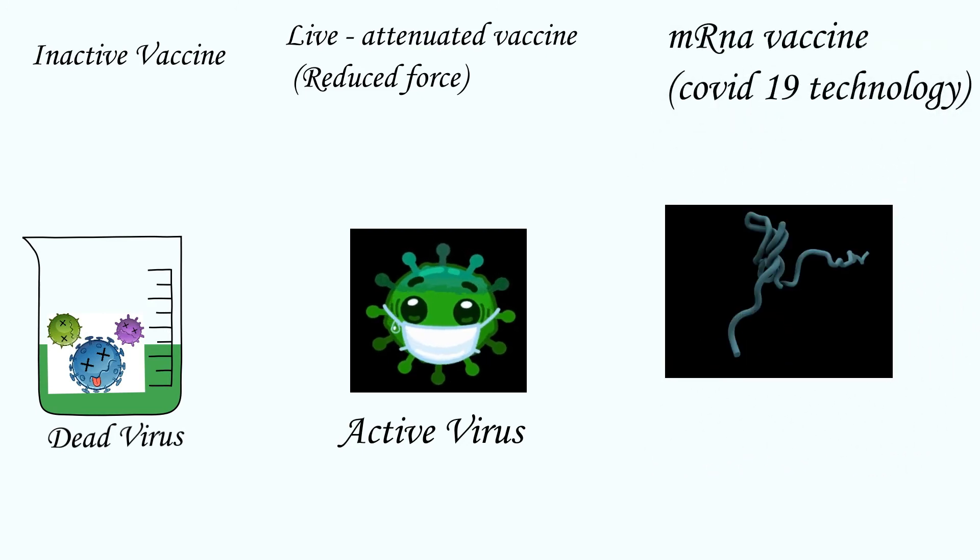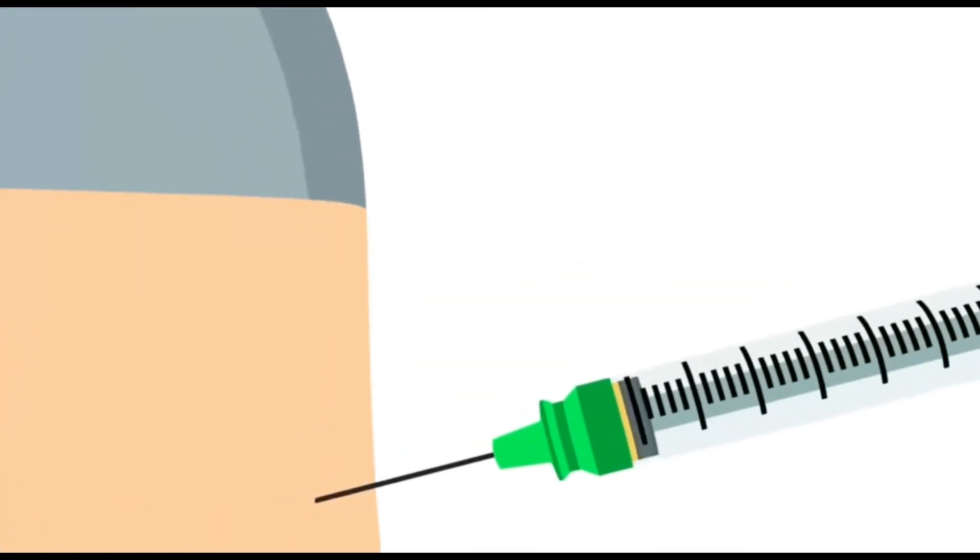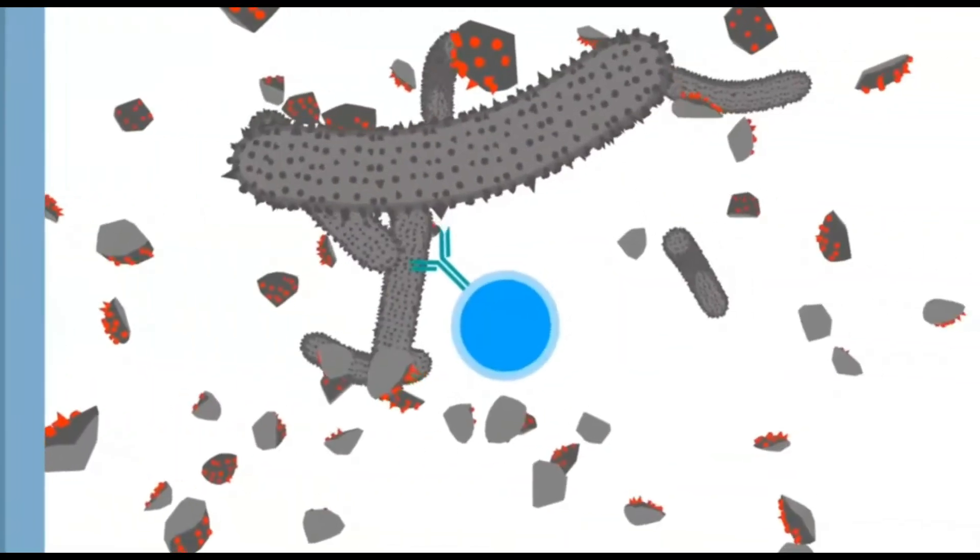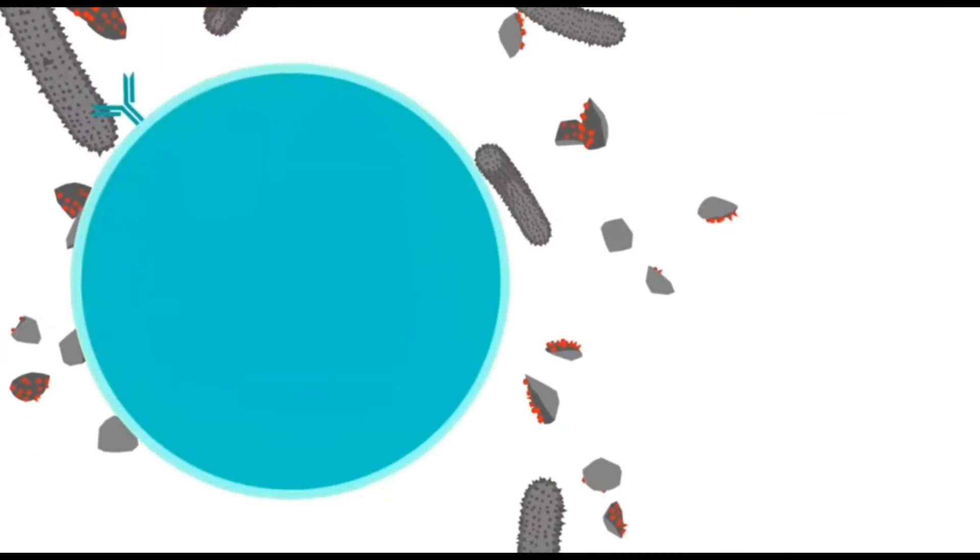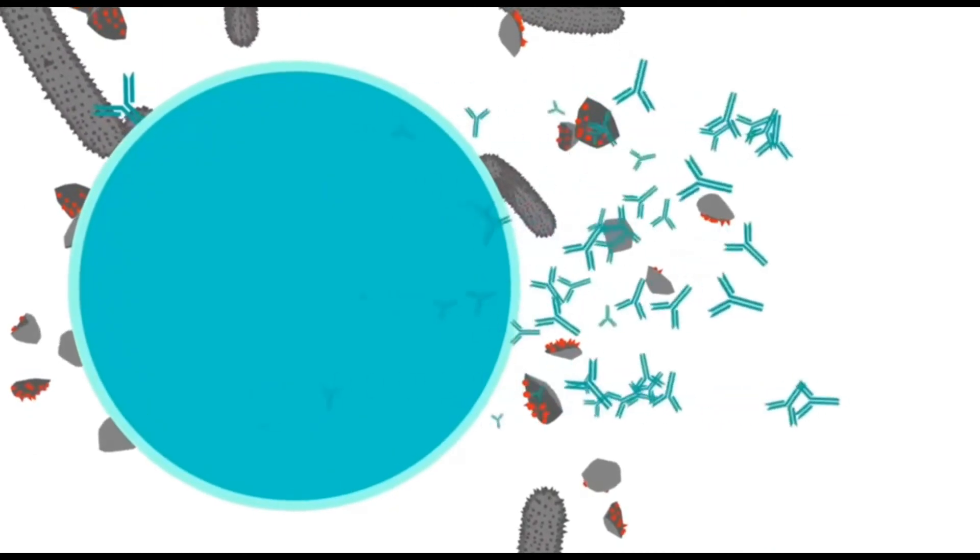When a vaccine is given to someone, these dead or inactive viruses enter the body and a natural response triggers, like when a real virus enters. The immune system prepares to fight; antigens fight the virus and memorize it, building up memory. So next time a virus comes in, the immune system comes into function quickly.